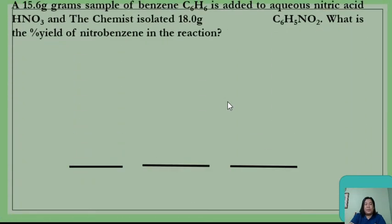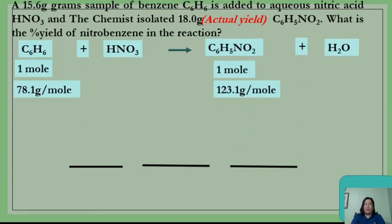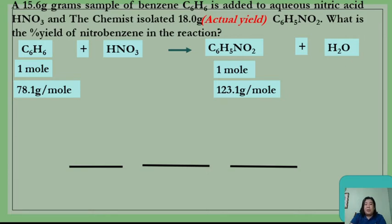Now we have our balanced equation. The actual worded problem states: a 15.6-gram sample of benzene is added to aqueous nitric acid, and the chemist isolated 18.0 grams of nitrobenzene. What is the percentage yield of nitrobenzene in this reaction? The first step is to identify the actual yield in the problem — you will not use that value yet in step 1. Keywords like 'isolated' or 'collected' indicate the actual yield. The value that precedes that word is your actual yield.